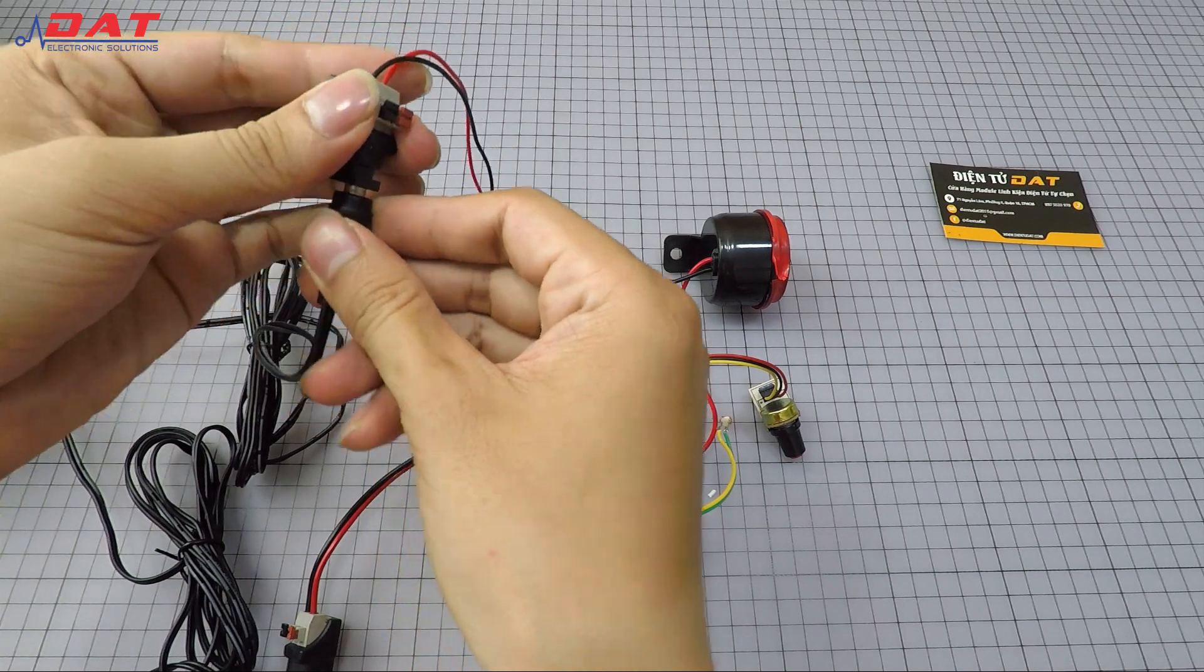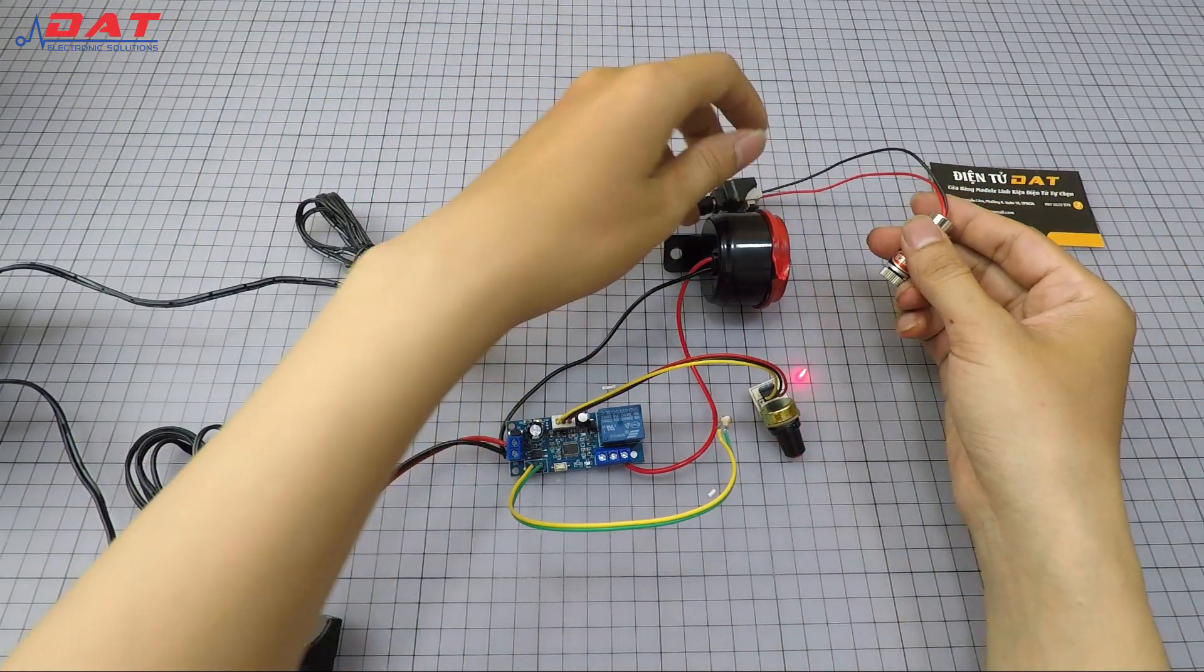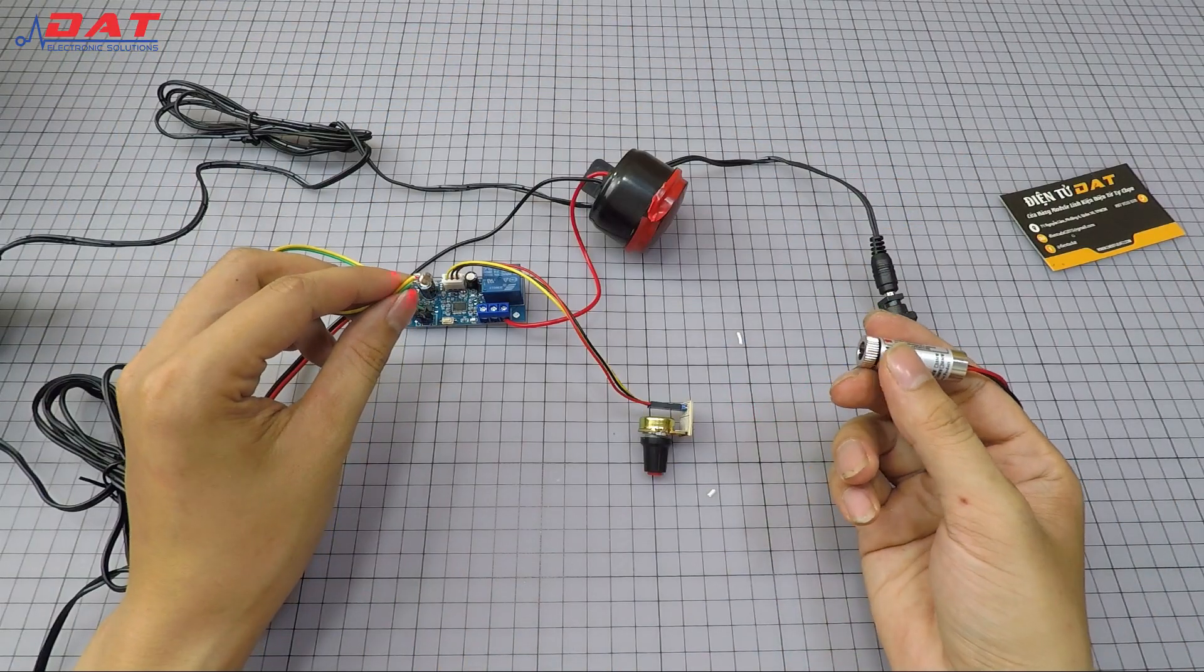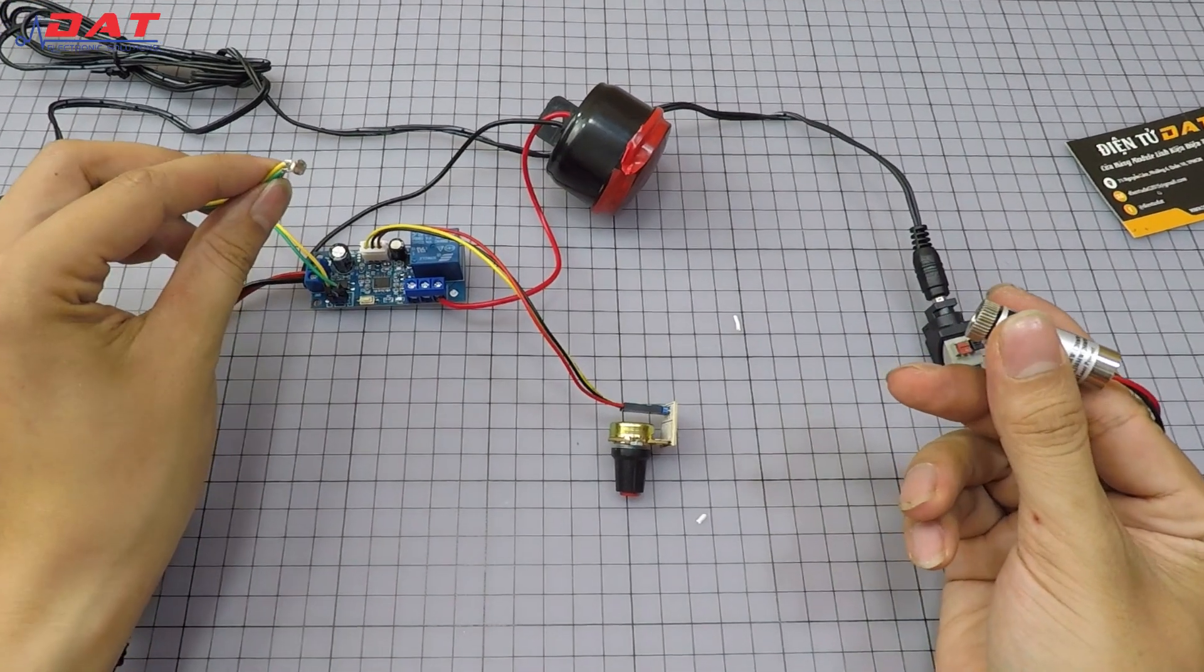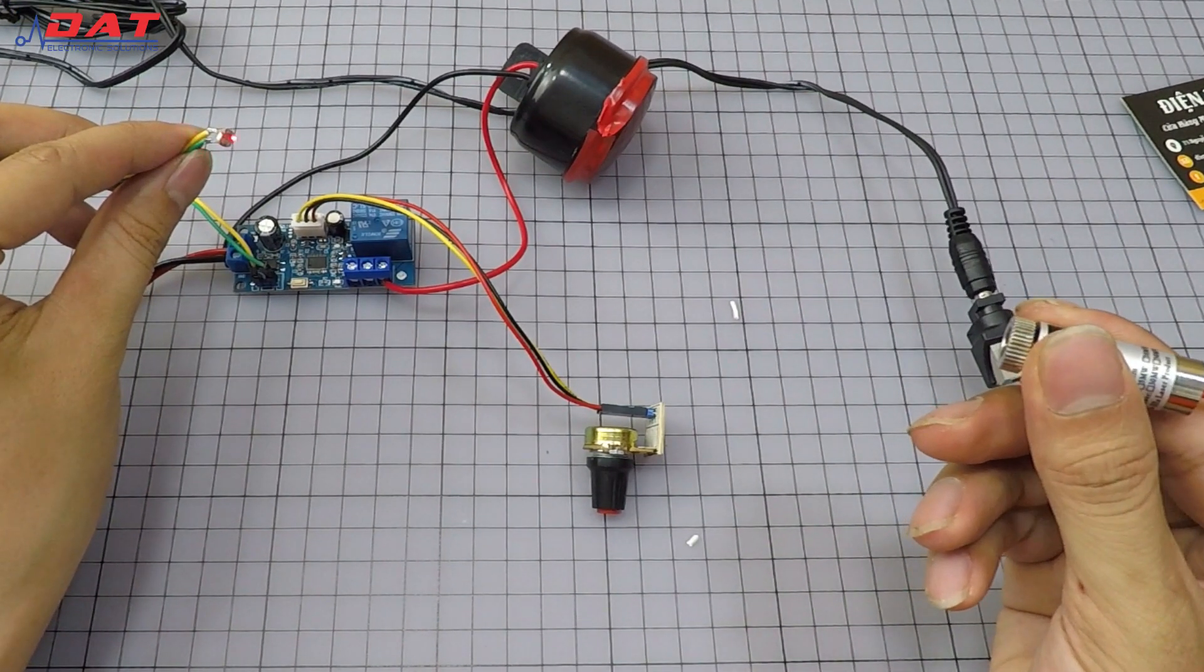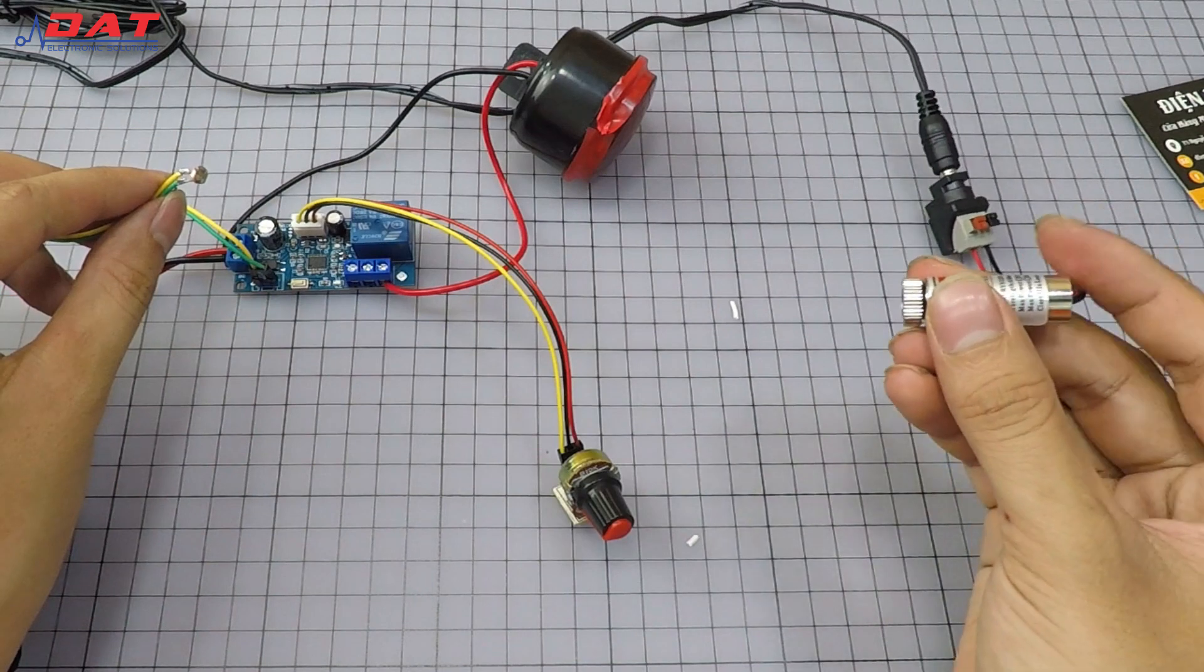Now whenever any object or person moves across and blocks the laser beam, the circuit will immediately activate the delay and sound the alarm.